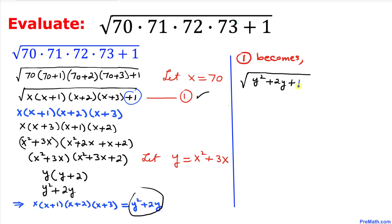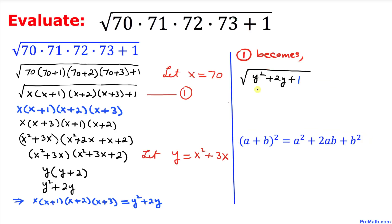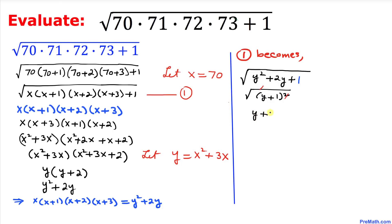Comparing y²+2y+1 with the formula (a+b)² = a²+2ab+b², this is a perfect square. So it can be written as (y+1)². The square and the square root undo each other, and we simply end up with y+1.